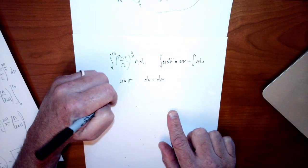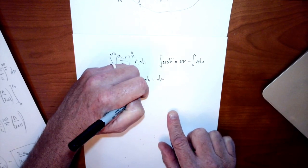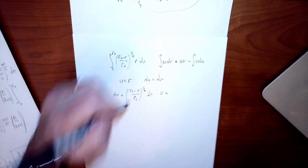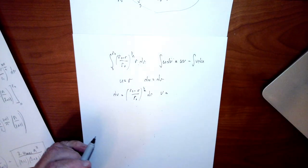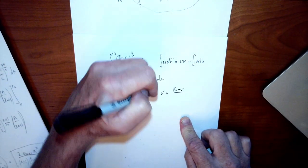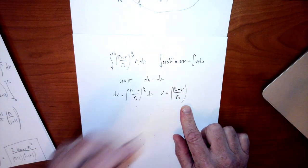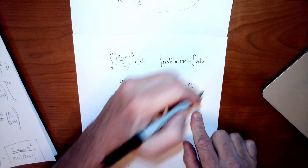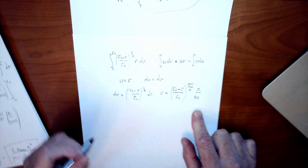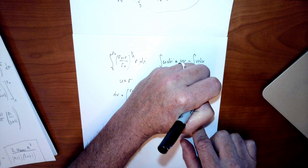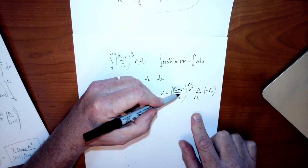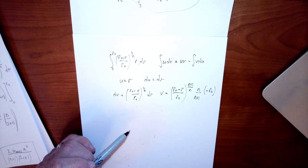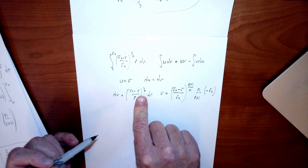That means dv is whatever's left: dv = (r₀ − r)/r₀ to the 1/n power dr. So v is the antiderivative of that. Taking that integral, I add 1 to the exponent: the exponent becomes (n+1)/n. Because I did that, I must multiply by n/(n+1), and I also pick up a factor of negative r₀ from the chain rule on (r₀ − r)/r₀. So v = (r₀ − r)/r₀ to the (n+1)/n power times n/(n+1) times (−r₀). Taking the derivative of this v returns the original dv, which is what I want.